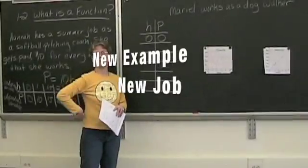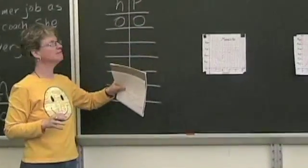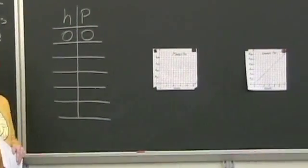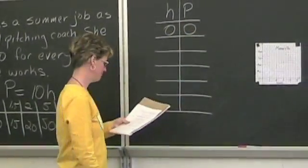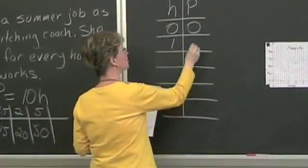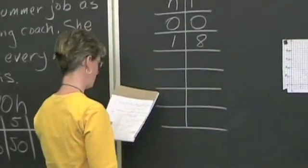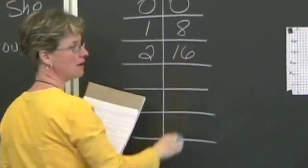New example. New job. And this new person. Mariel. She's working as a dog walker. One day she worked zero hours. She made zero pay. Then one day she worked one hour and she made eight dollars. Then one day she worked two hours and she made sixteen dollars.